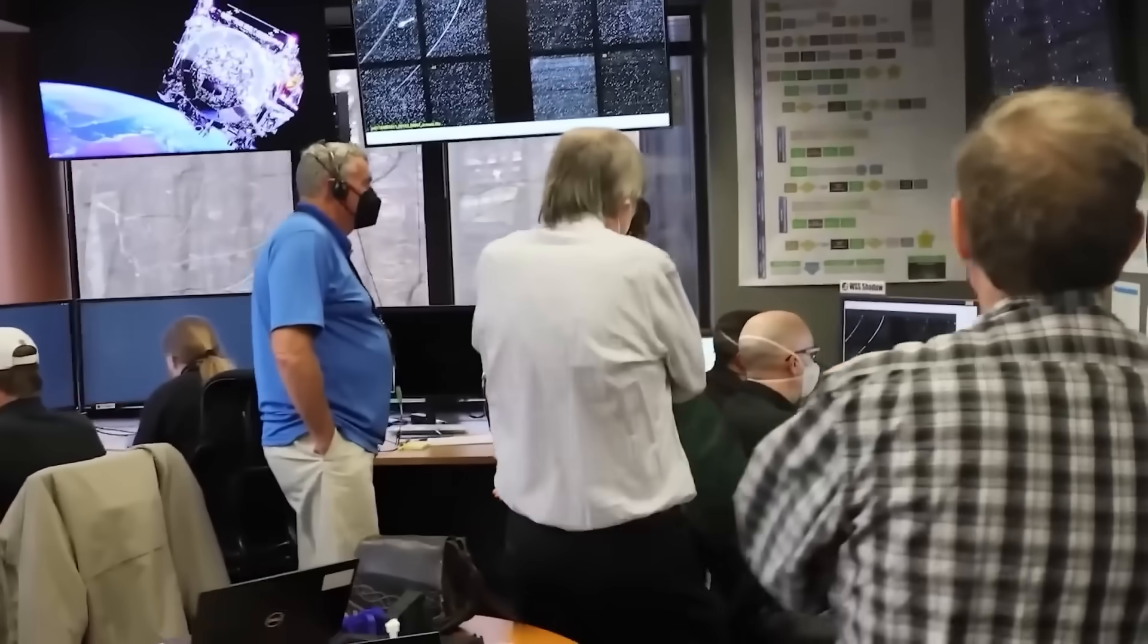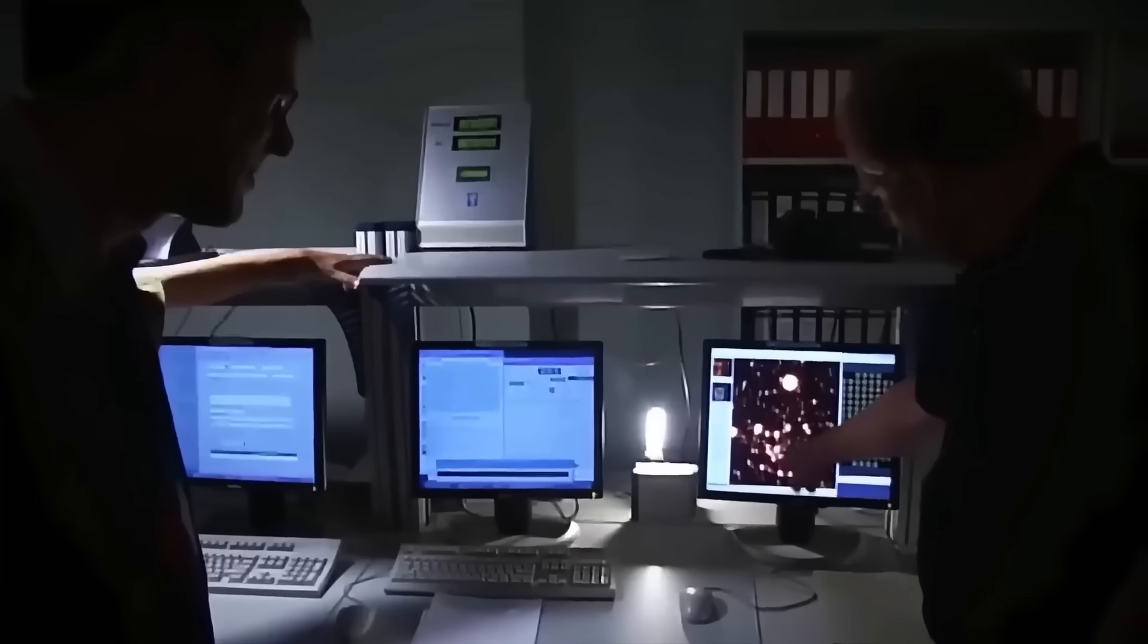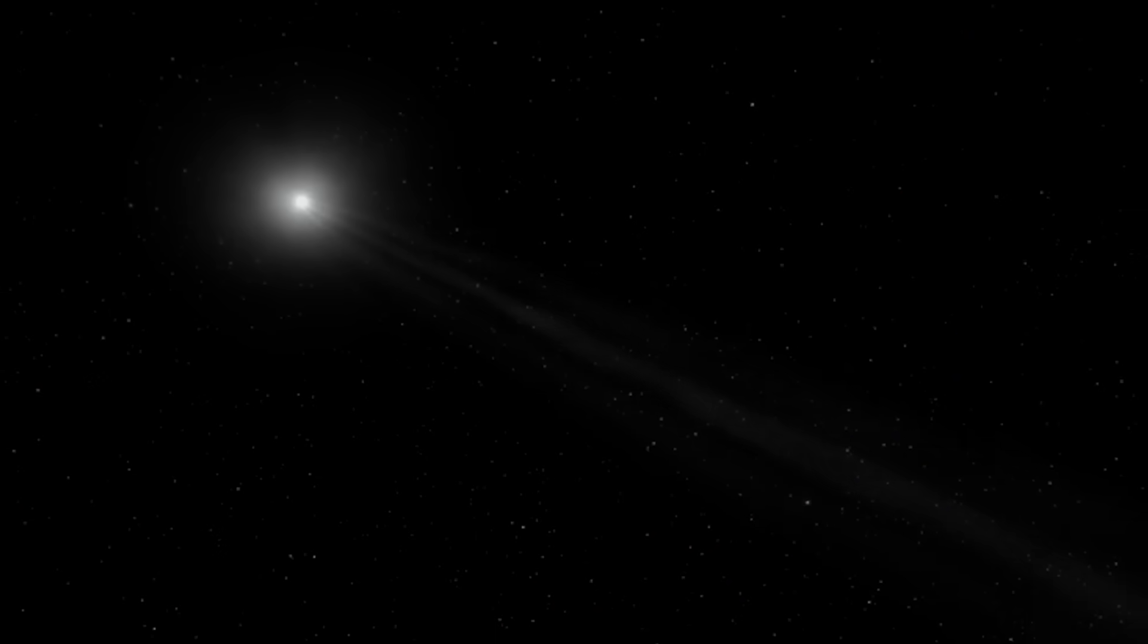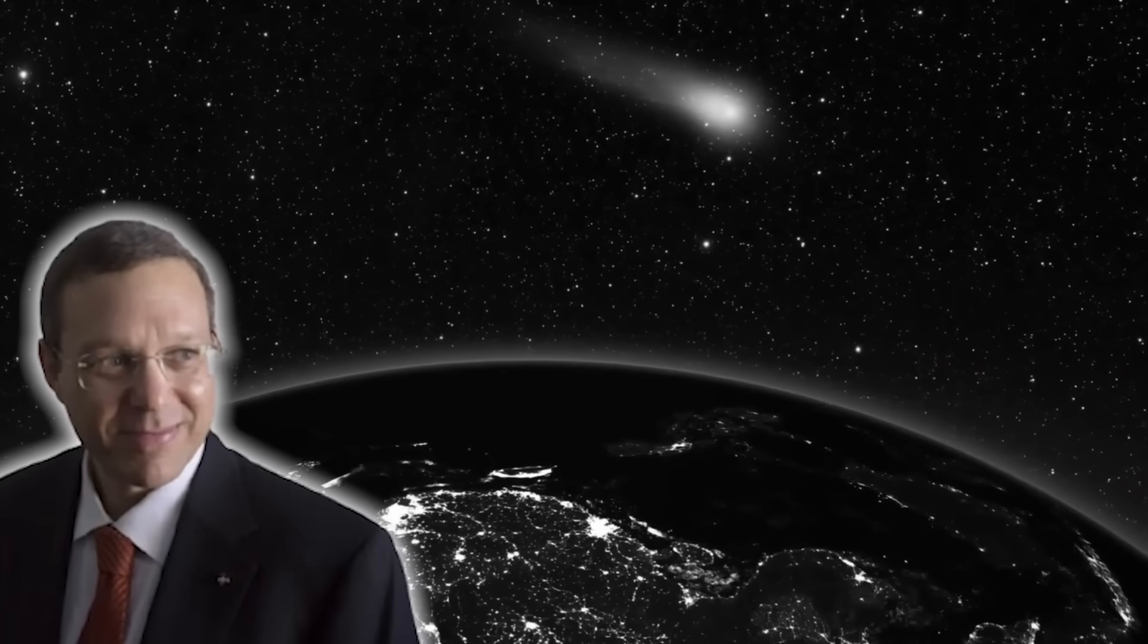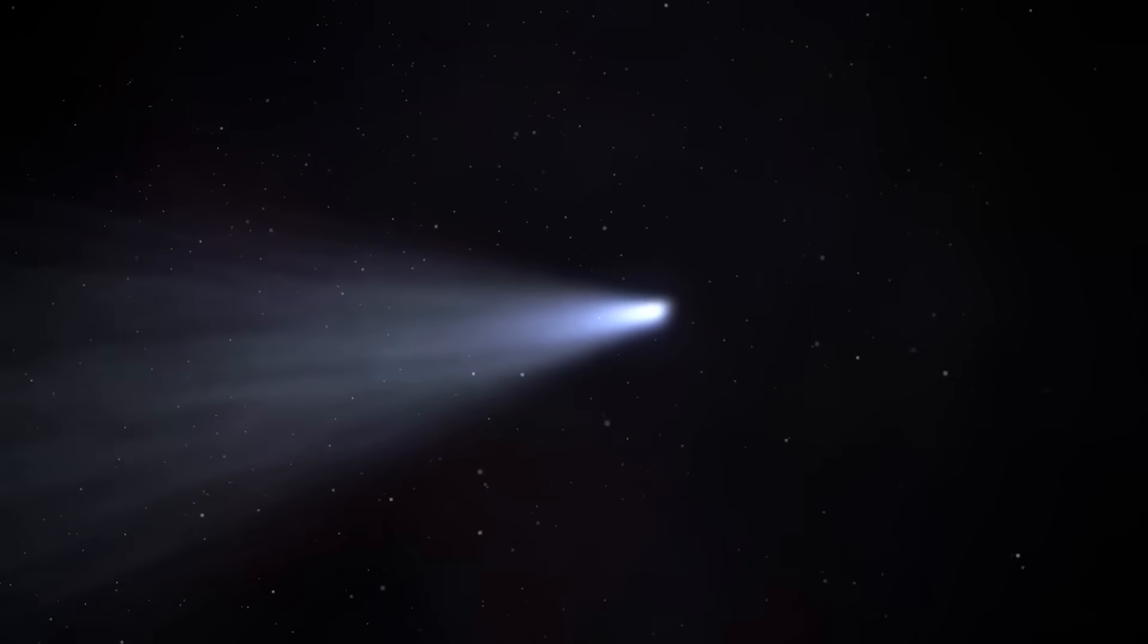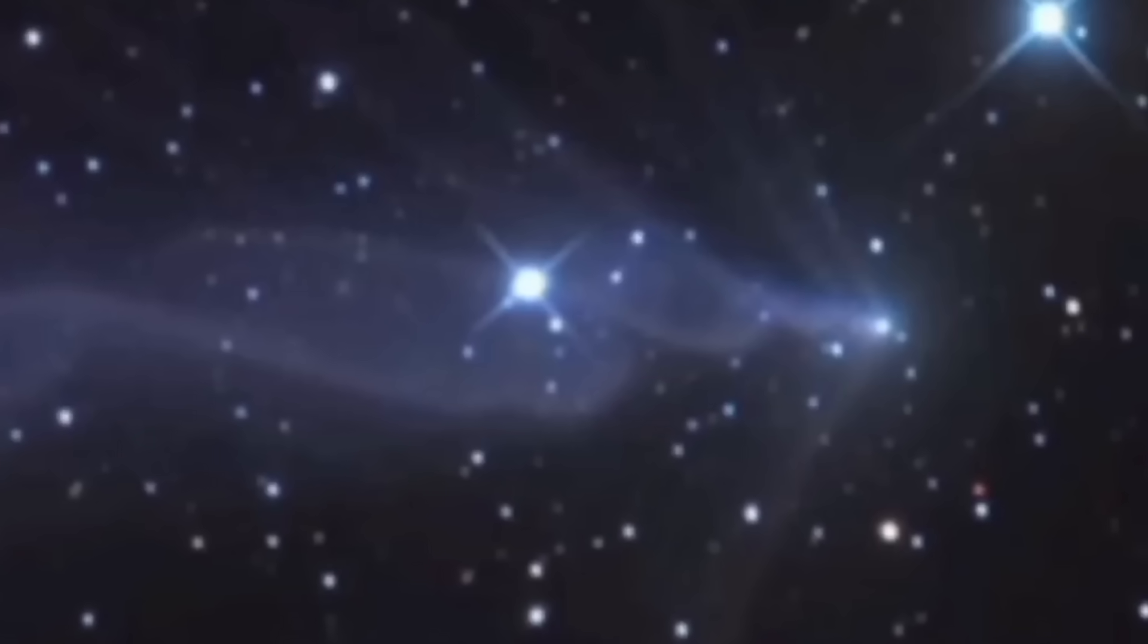But then came the light itself. Avi Loeb, the former chair of Harvard's astronomy department, and his colleague took a deep dive into the numbers, analyzing the brightness profile of this strange glow. What they found was jaw-dropping. The light from the coma faded incredibly steeply, much faster than the light from any known comet. But not all things are what they seem. Loeb realized this steep light curve pointed to one unbelievable conclusion. The sun wasn't the primary source of illumination. The object was lighting up the dust cloud from within. It was generating its own light.